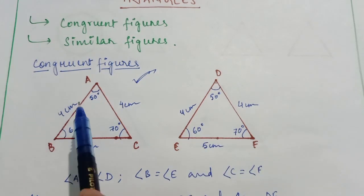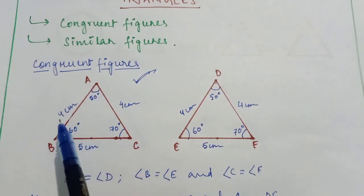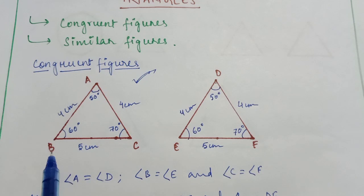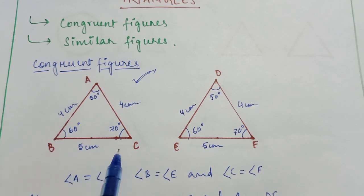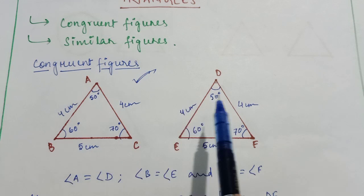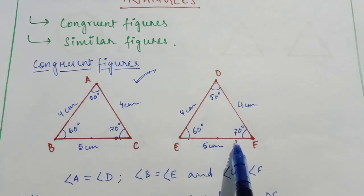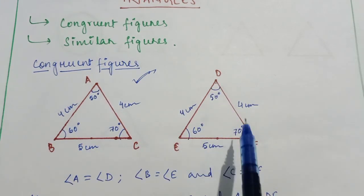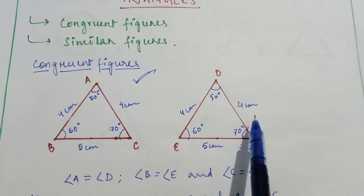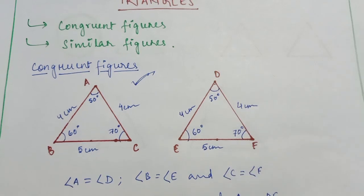Also, AB is equal to 4 cm, BC is equal to 5 cm, and AC is equal to 4 cm. And DE is equal to 4 cm, EF is equal to 5 cm, DF is equal to 4 cm.